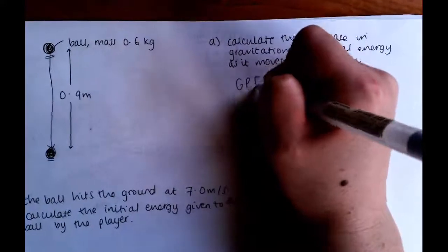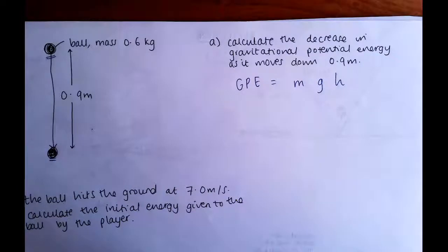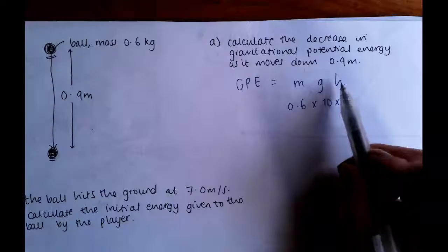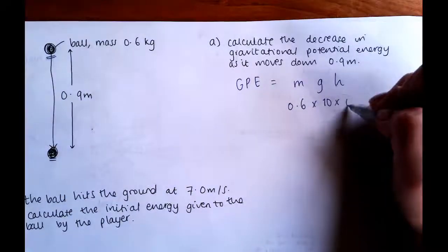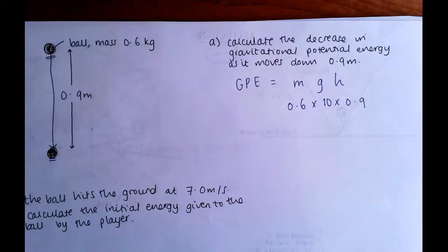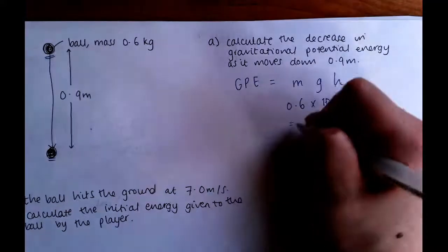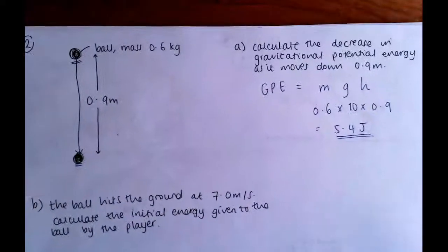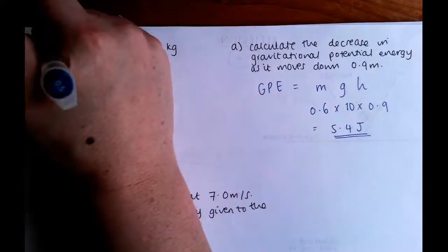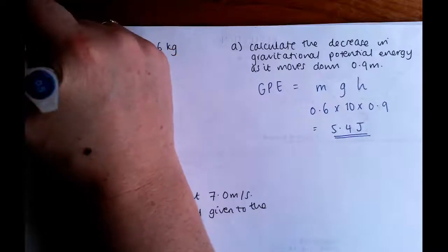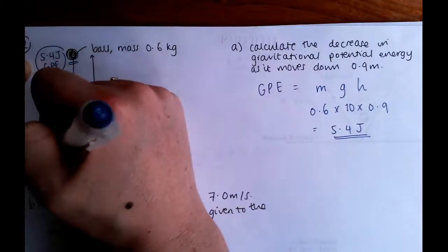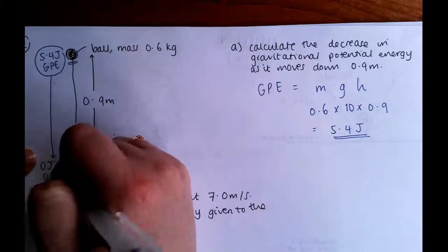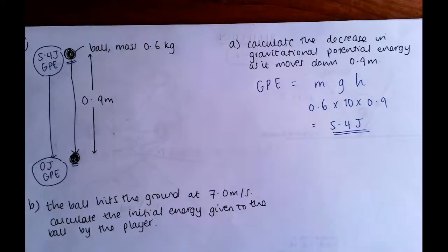We're going to use GPE equals MGH. This time our mass is 0.6 kilograms, G is still 10, and H, the height that the object has moved through, is 0.9 metres. When you do that, you get 5.4 joules. So what this means is that when the ball was at the top it had 5.4 joules of GPE, and as it fell and reached the bottom of the 0.9 metres, it has lost all of that. That's the change in potential energy.